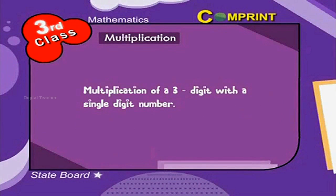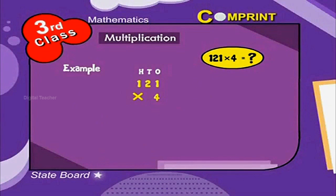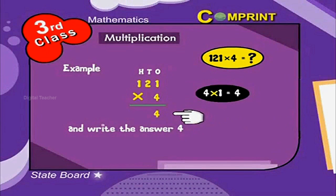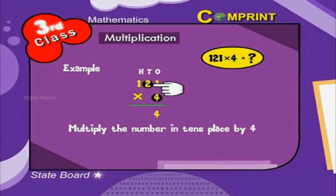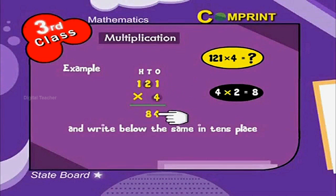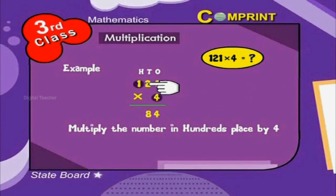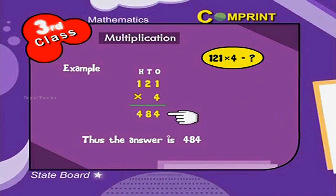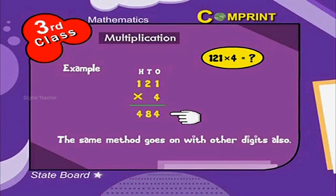Multiplication of a 3-digit number with a single digit number. Here is an example: 121 into 4. First, multiply the number in the 1's place by 4, and write the answer 4. Then multiply the number in the 10's place by 4: 4 into 2 is equal to 8, and write it in the 10's place. Multiply the number in the 100's place by 4: 4 into 1 is equal to 4, and write it in the 100's place. Thus, the answer is 484. The same method goes on with other digits also.